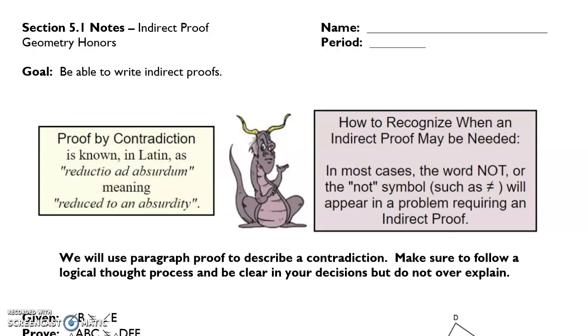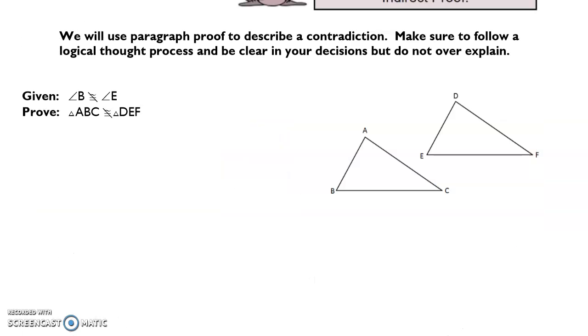So if we look at our first example here, and we will be asked to do this using paragraph proof. I know that's not the best information for you guys, but make sure that you're specific, make sure you're clear and precise, and make sure that you go over everything in detail here. Now, I know I'm using indirect proof because I've been asked to prove that two triangles are not congruent.